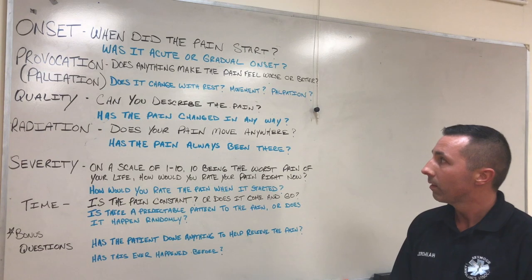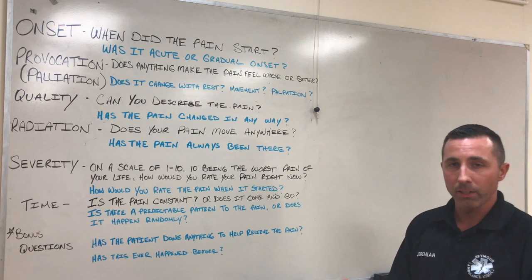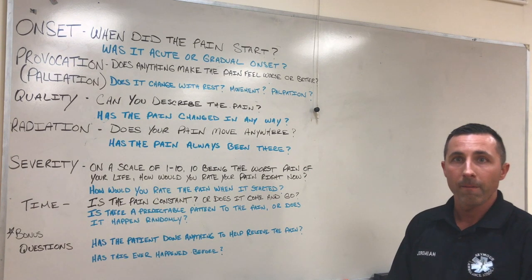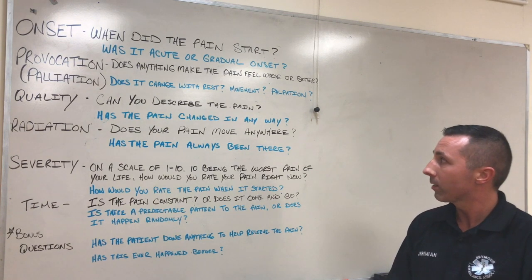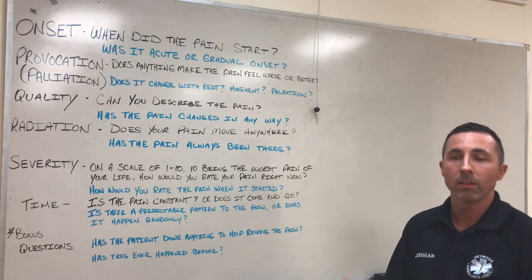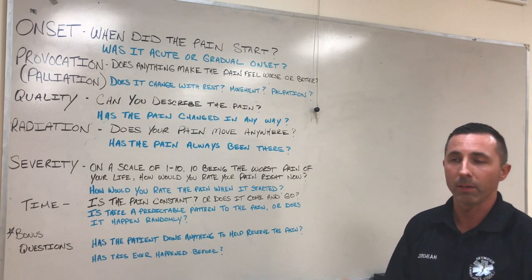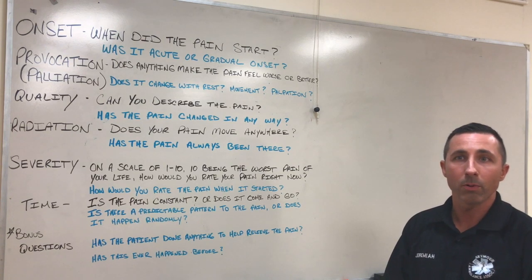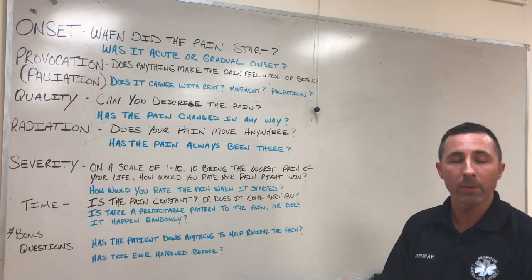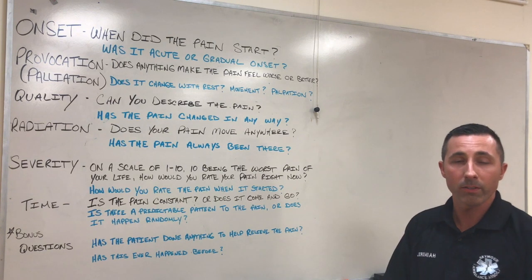R is for Radiation. With radiation, we want to ask the patient: does their pain move or travel anywhere? A good clarifying question to ask would be: has the pain always been there, or did it start somewhere else and now this is where they're experiencing it? Case in point — if someone's suffering from an MI and they have chest pain that radiates to the left arm and jaw, that's going to help us further suspect that they're having an MI.